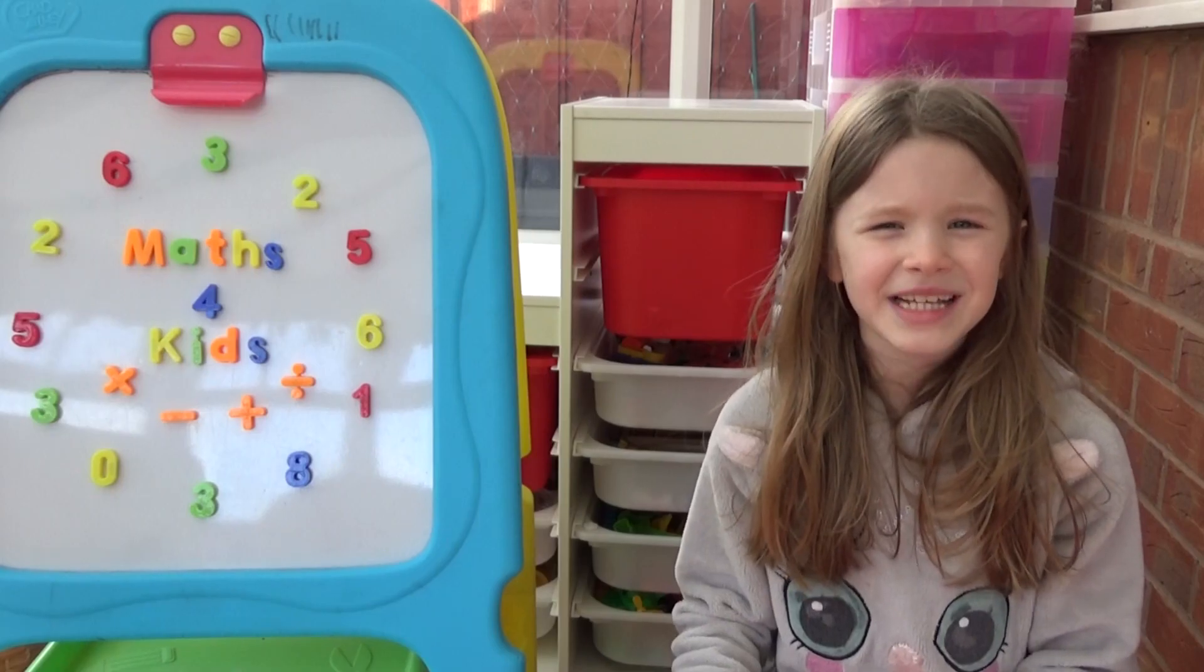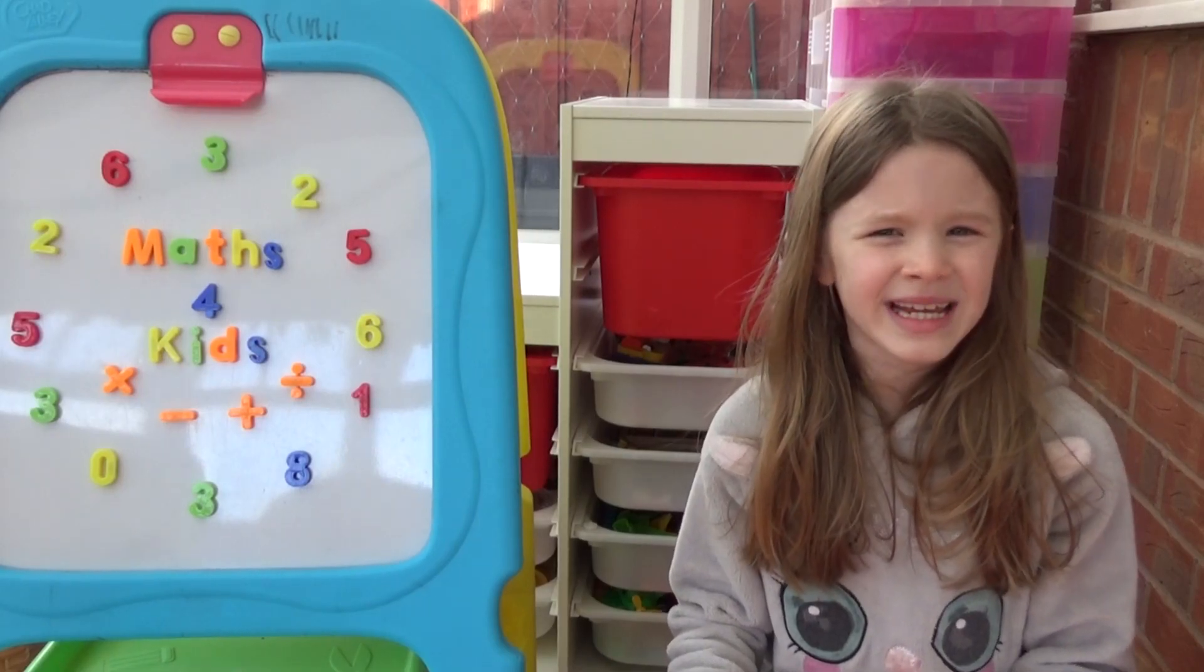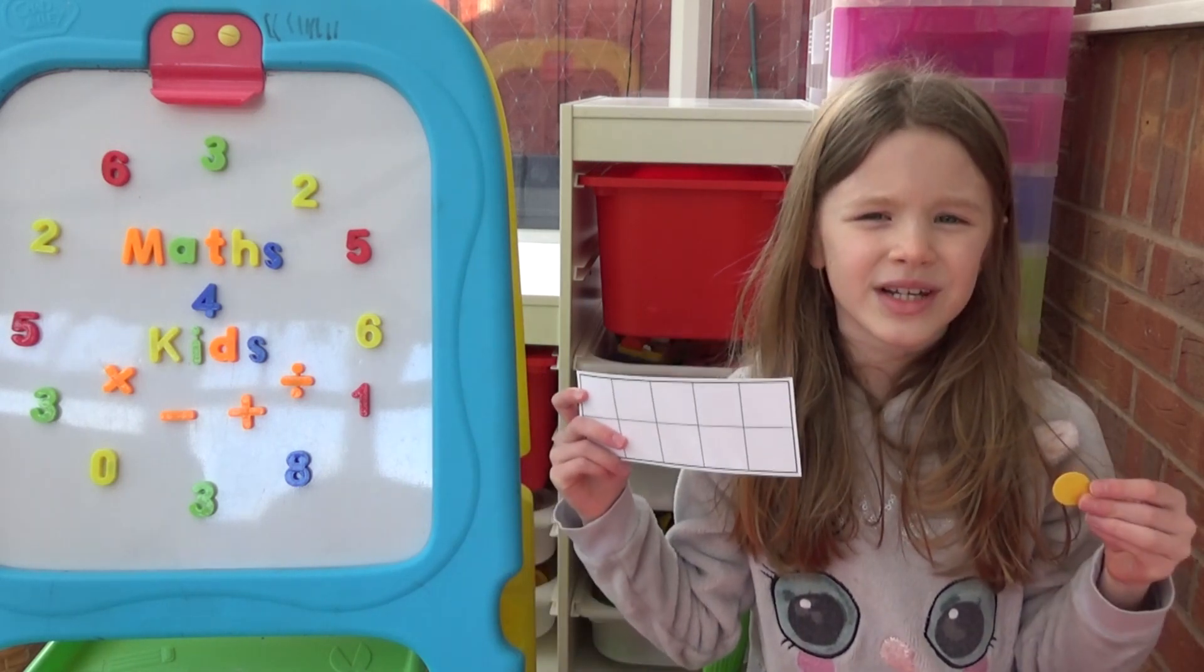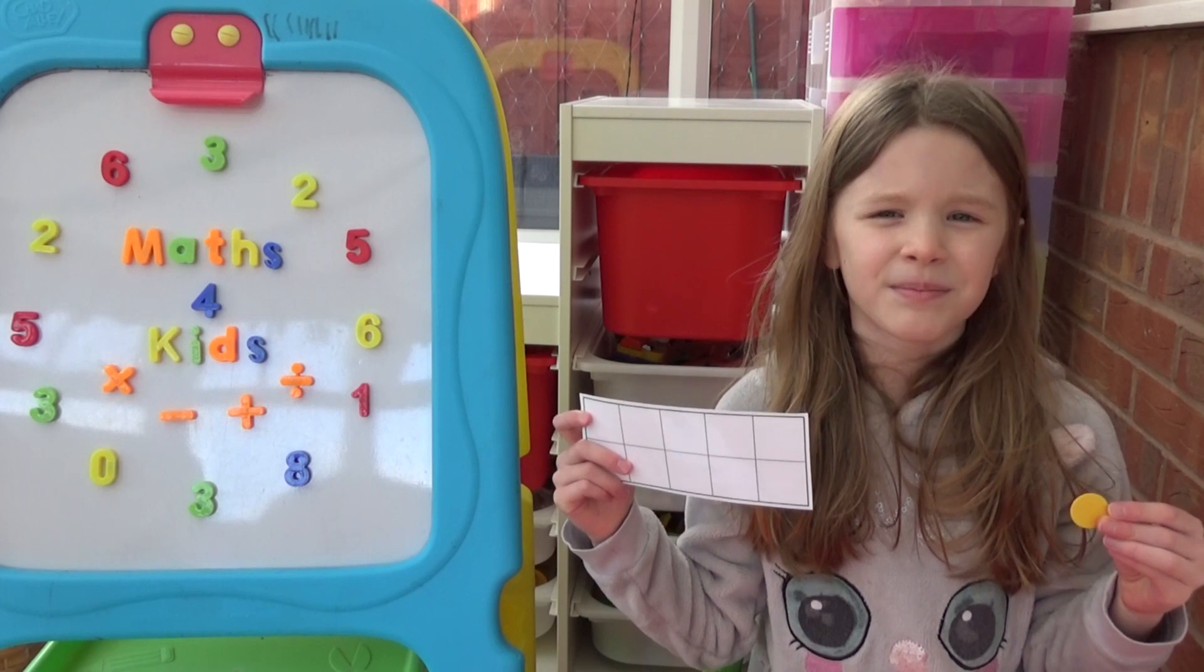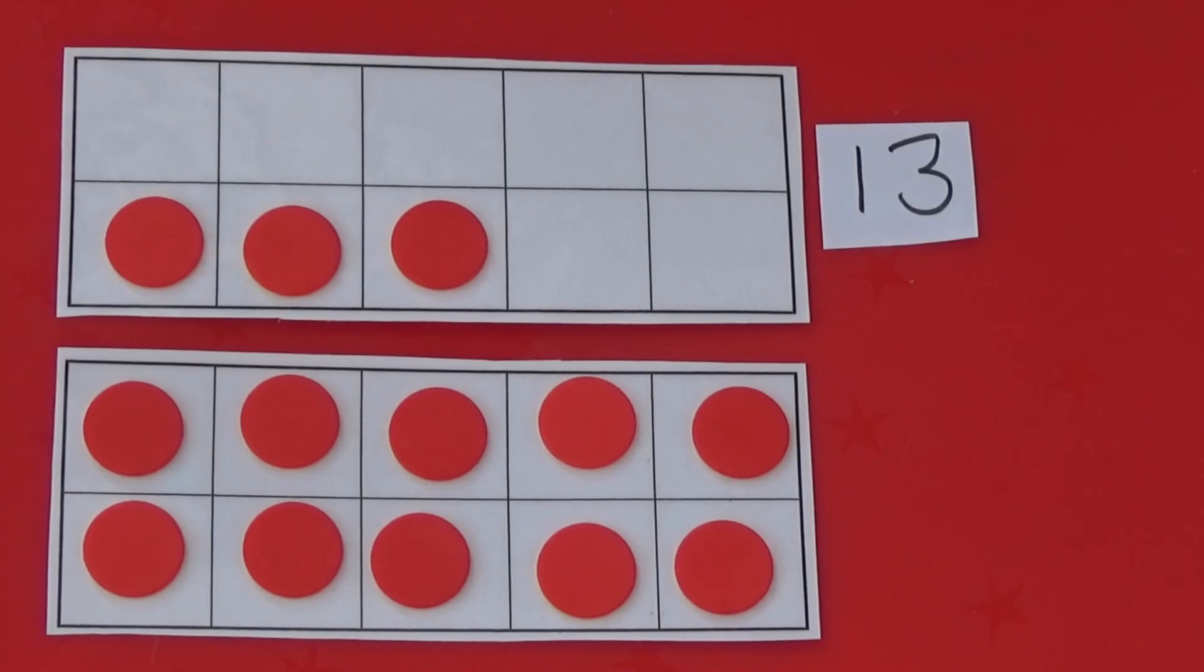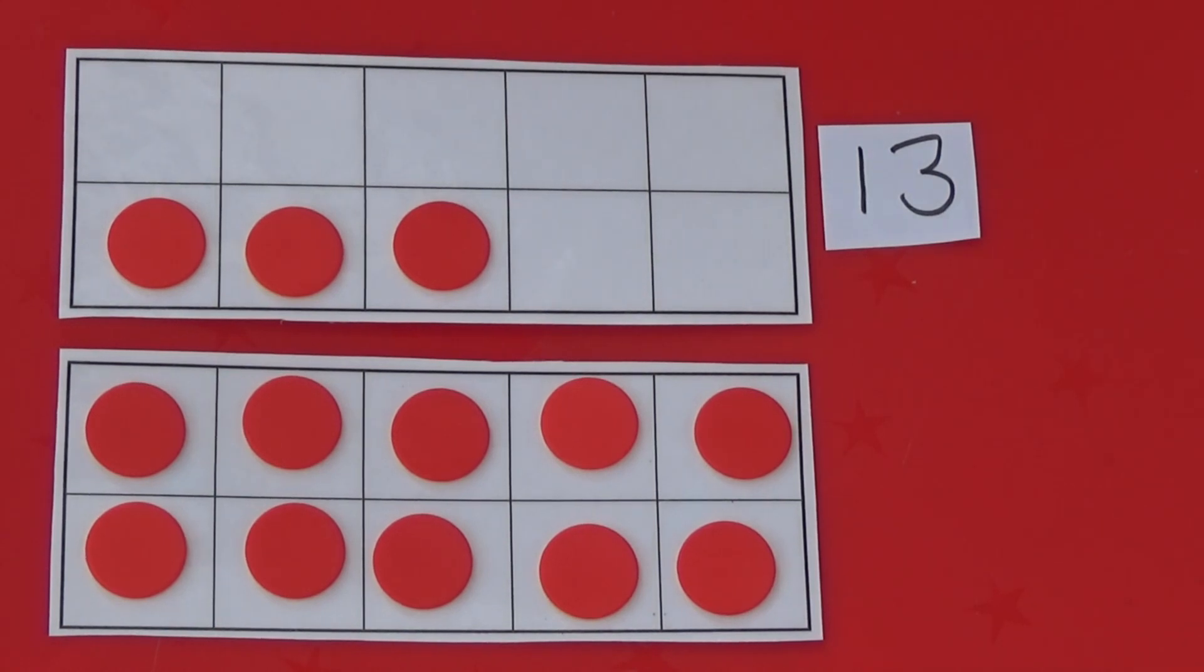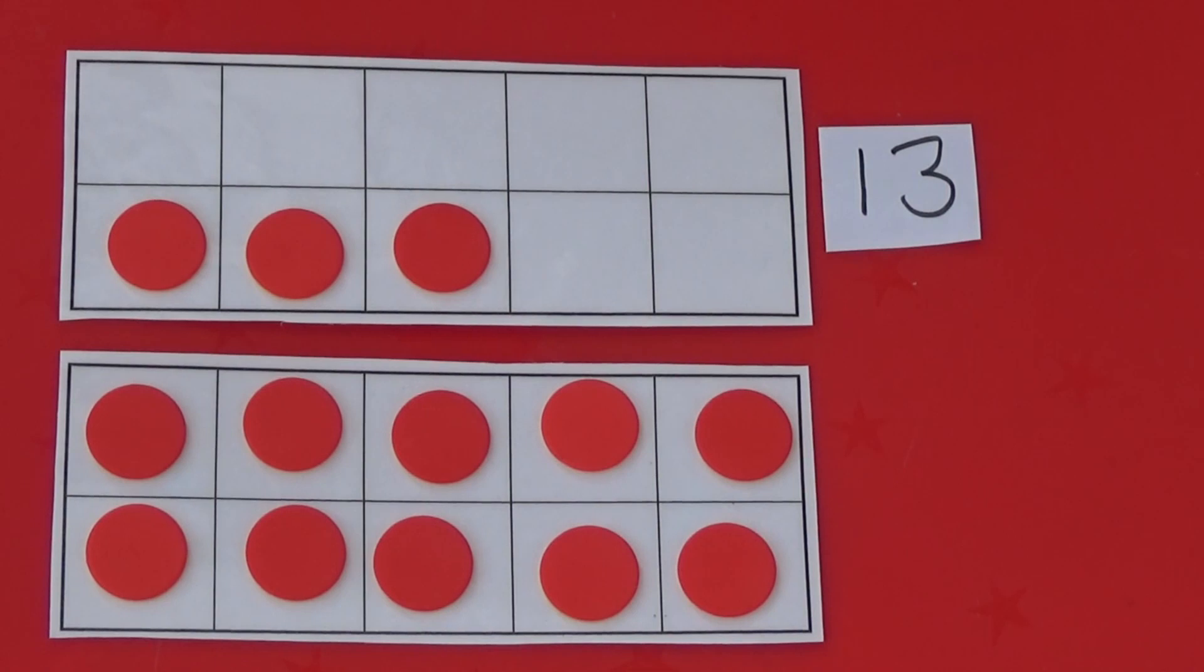Another place value activity we can do is to use tens frames and counters to represent different numbers. Here I have filled one whole tens frame and three in the second tens frame. So the number I am representing is thirteen.